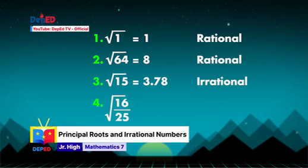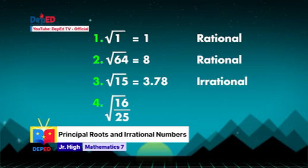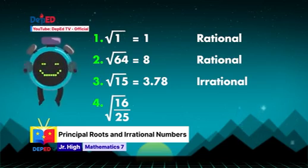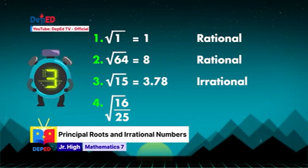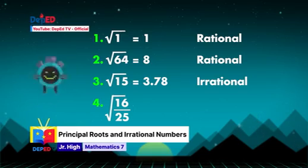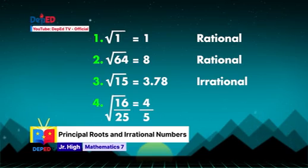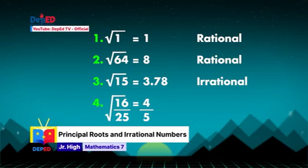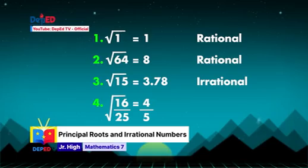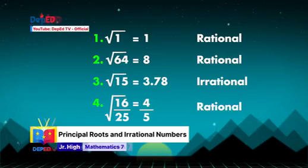Number 4: square root of 16 over 25. The correct answer is blue — since we have extracted a rational number, which is 4 over 5. Therefore, we can say that the principal root of square root of 16/25 is rational.